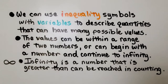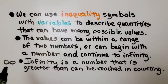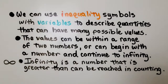We can use inequality symbols with variables to describe quantities that have many possible values. The values can be written within a range of two numbers, or can begin with a number and continue to infinity. This is the infinity symbol — it looks like a sideways eight. Infinity is a number greater than can be reached in counting.